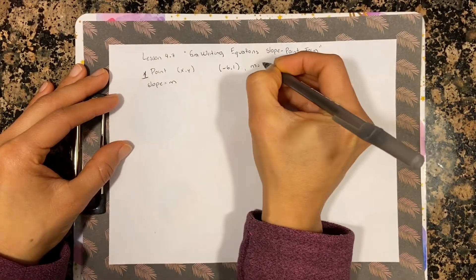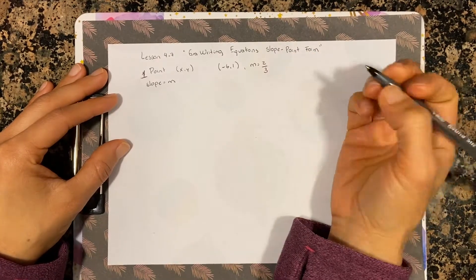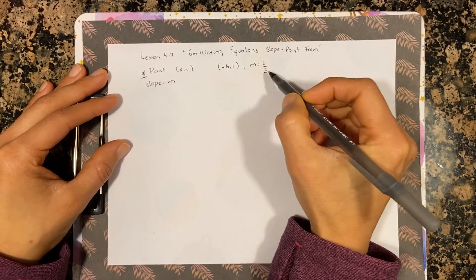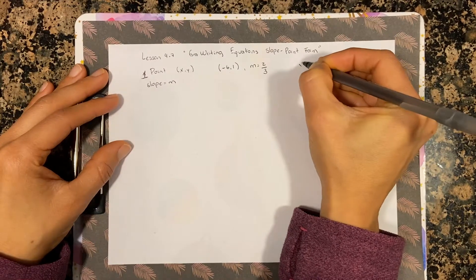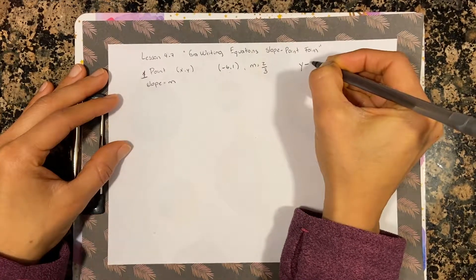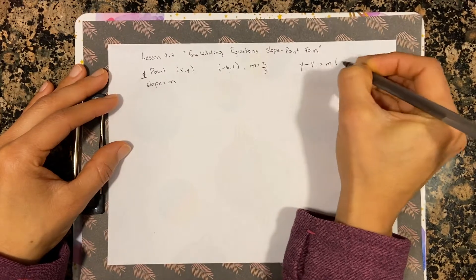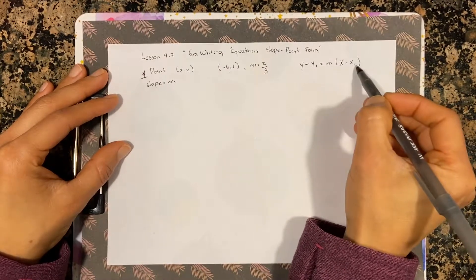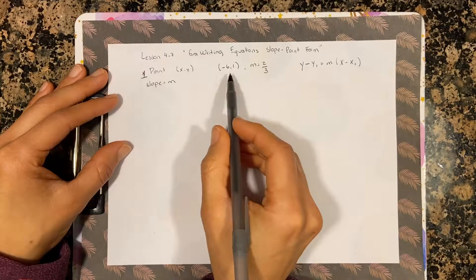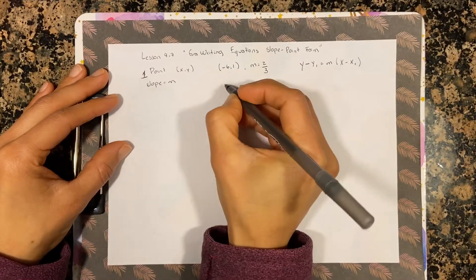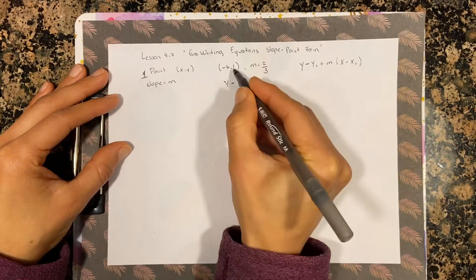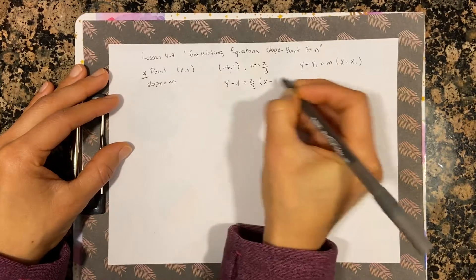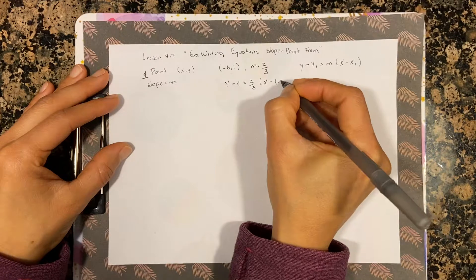Let's see an example. Let's say you are given a point (-6, 1) and a slope of 2/3, and you are asked to write the equation. The formula when you only have one point and a slope is: y minus y₁ equals the slope times x minus x₁. The y₁ and x₁ are the points that you do know. So here you write y minus 1 equals 2/3 times x minus (-6).